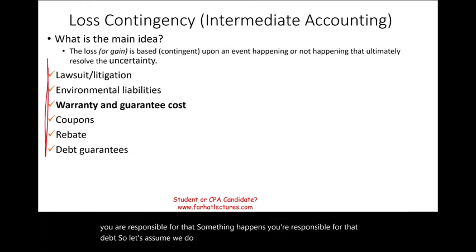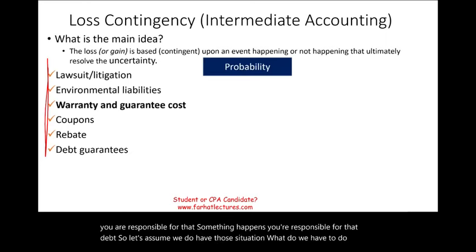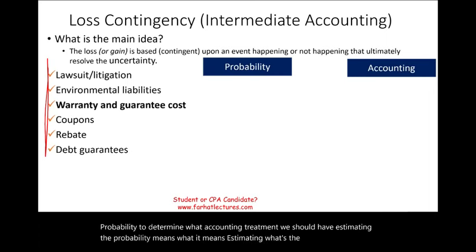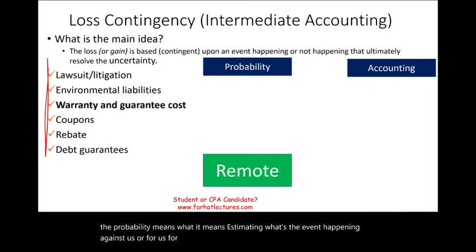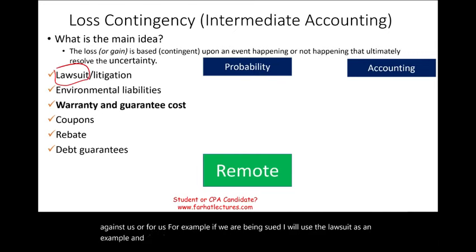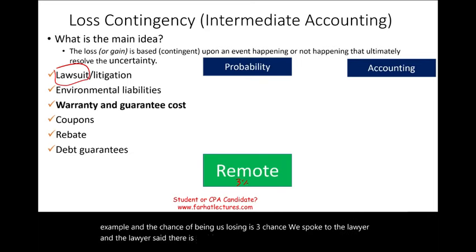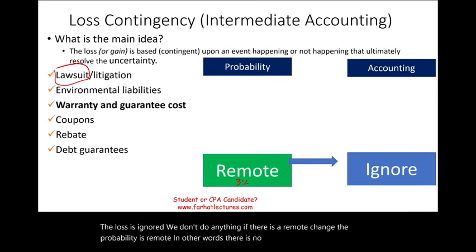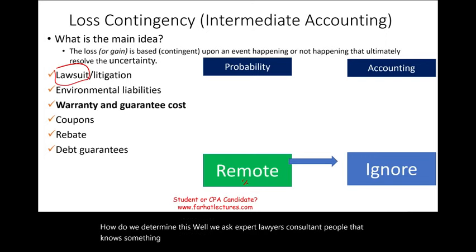So given those situations, what do we have to do? First, we estimate the probability to determine the appropriate accounting treatment. Estimating probability means determining what's the likelihood of the event happening against us. For example, if we are being sued and the chance of us losing is very small — say 3% — and we spoke to the lawyer who said there's nothing to this case, then if the probability is remote, the loss is ignored and we don't do anything.